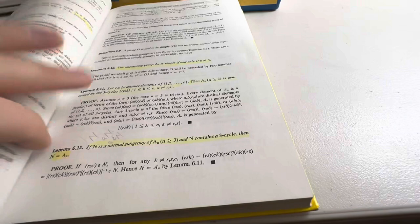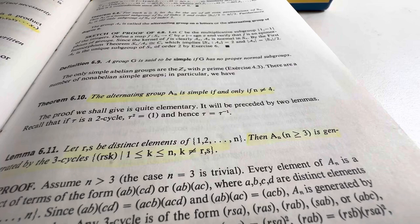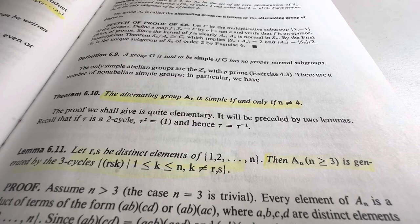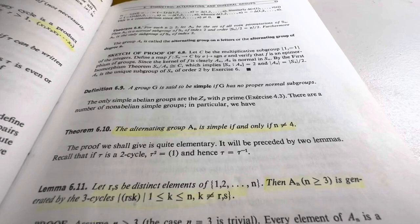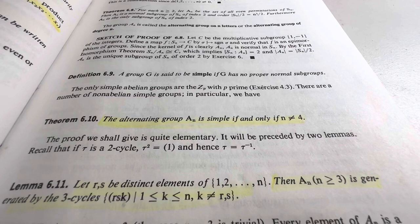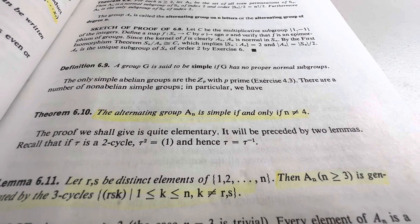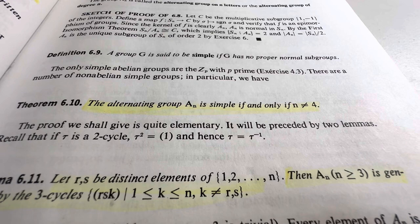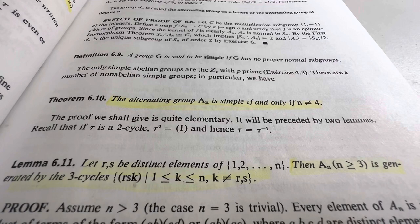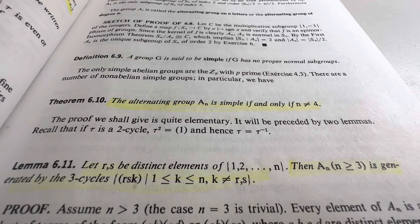The alternating group AN is simple if and only if N is not equal to 4. Wait a minute. Not equal to 4. That's kind of interesting. So if N is literally any other number, positive integer, then the alternating group is simple. But if it's 4, it's not. What does A4 look like? I know it's the alternating group, so it's half of S4. I think it's the even permutations in S4. So S4 has 4 factorial. So if you divide by 2, that's 4 times 3, and that's 12. So it's a group of order 12.